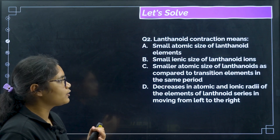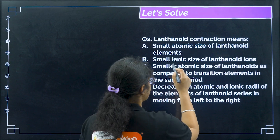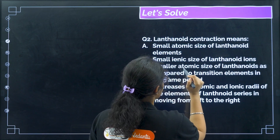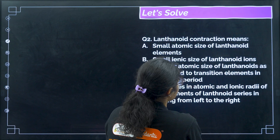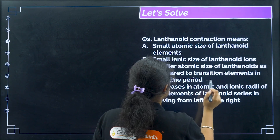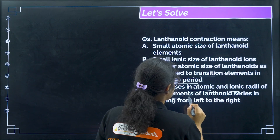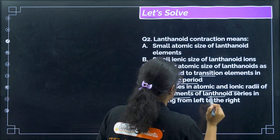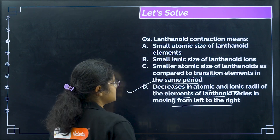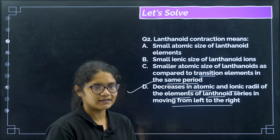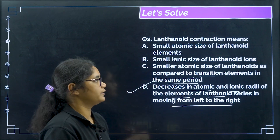Question 2 — Lanthanide contraction means: the correct answer is the decrease in atomic and ionic radii of the elements of the lanthanide series moving from left to right. That is what lanthanide contraction means — a decrease in atomic size along the period.